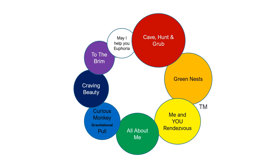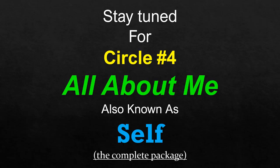Stay tuned for circle number four, all about me, also known as self. This would be a complete package if you have reached self-actualization. We will discuss what Abraham Maslow describes as the characteristics of a self-actualized individual. Thank you for watching.